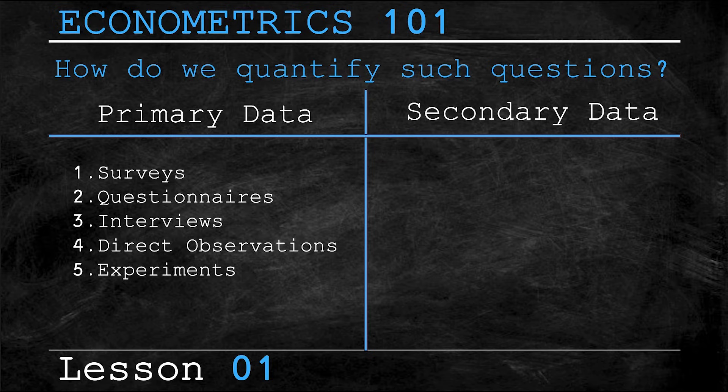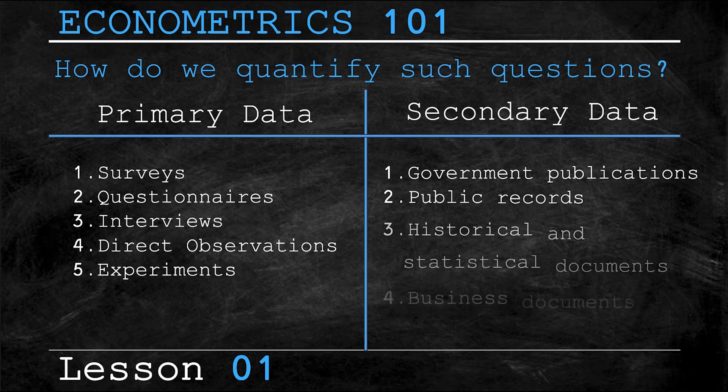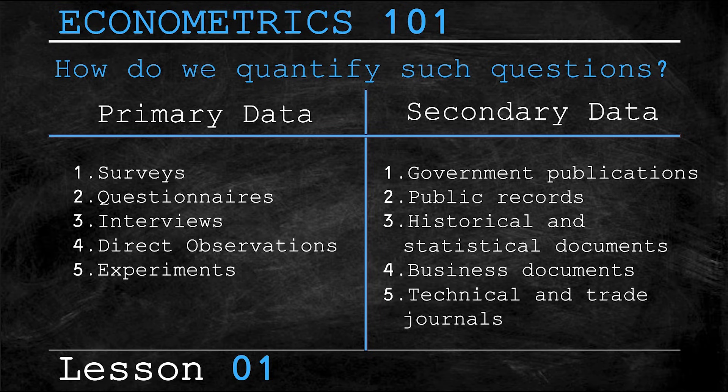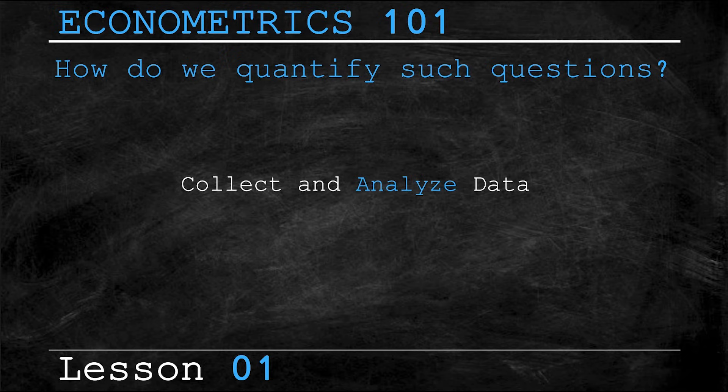Common sources of reliable secondary data include government publications, public records, historical and statistical documents, business documents, as well as technical and trade journals. So that's how we collect data, but how do we analyze it?